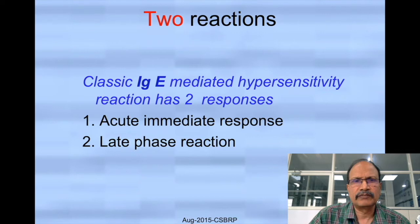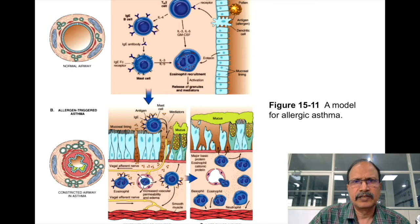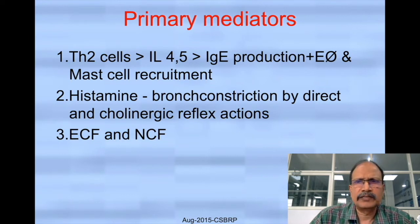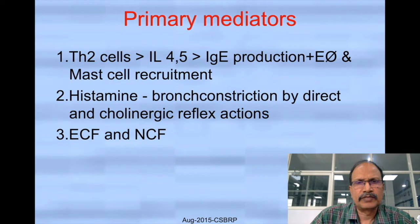There are two types of reactions that can be appreciated in asthma: acute immediate response and late phase reactions. In the acute phase, primary mediators include TH2 differentiation, which is associated with stimulation of B cells to produce IgE. In addition, there will be recruitment of eosinophils because interleukin-5 is produced by TH2 cells, and mast cell recruitment associated with histamine release, which is a bronchoconstrictor. There are also cholinergic reactions that stimulate smooth muscle to facilitate further bronchoconstriction.